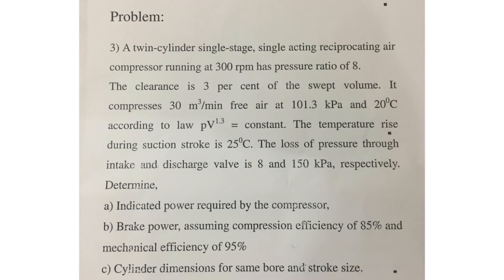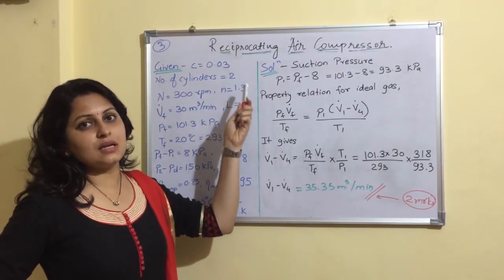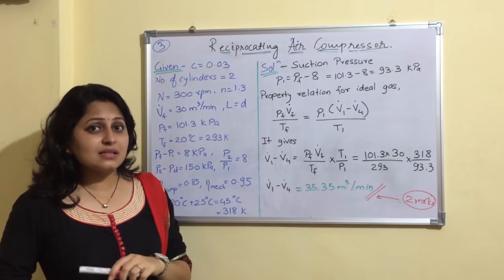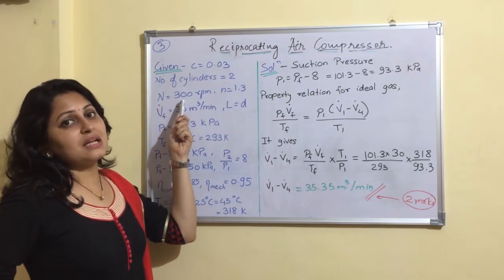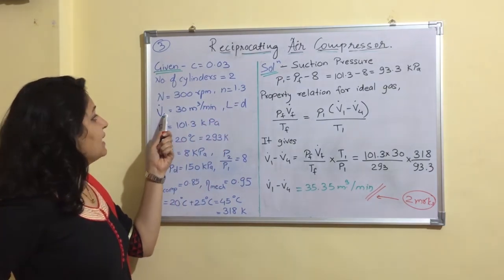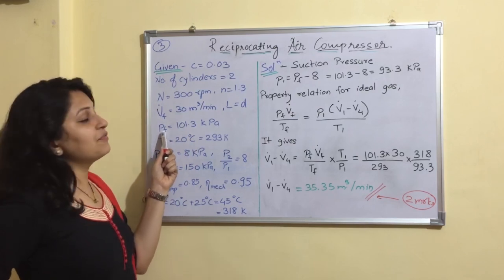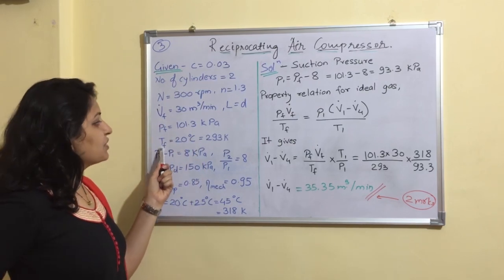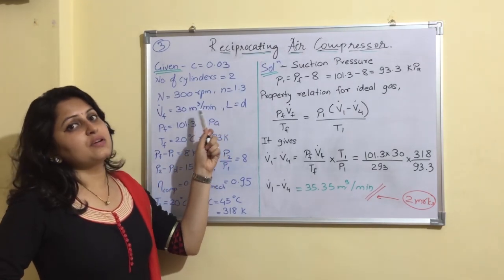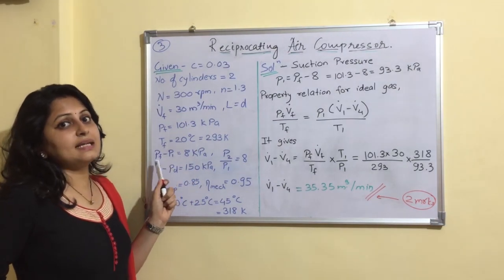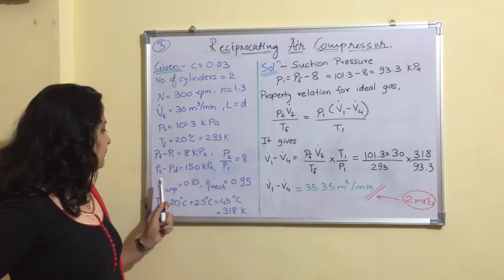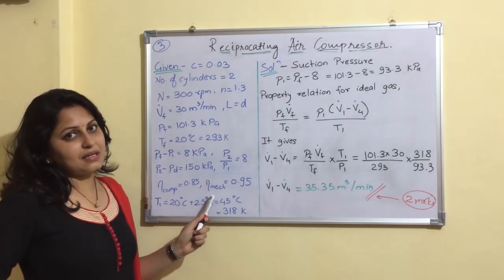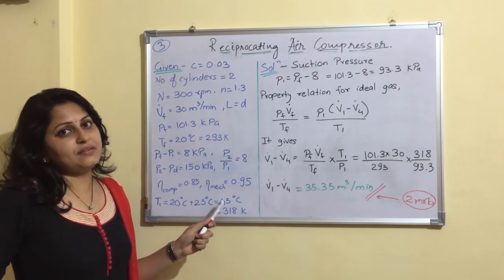Note: this is not a multi-stage problem — it is single stage, single acting with two cylinders. Given: number of cylinders = 2, clearance = 3% of swept volume, N = 300 rpm, index n = 1.3, free air delivery = 30 m³/min, free air conditions: P_F = 101.3 kPa and T_F = 20°C, stroke = diameter, pressure drop at inlet = 8 kPa, pressure drop at delivery = 150 kPa, pressure ratio = 8, compressor efficiency = 85%, mechanical efficiency = 95%, and inlet temperature T1 = 45°C.